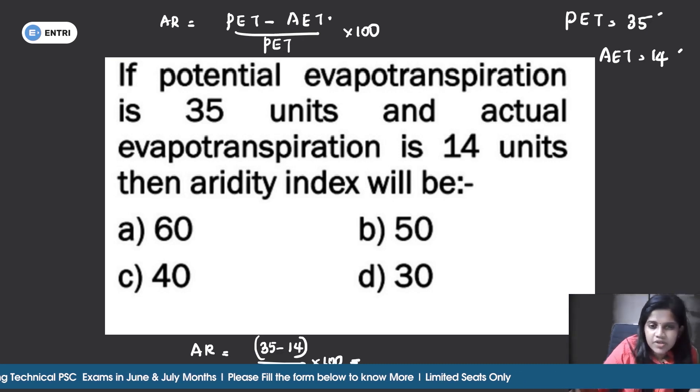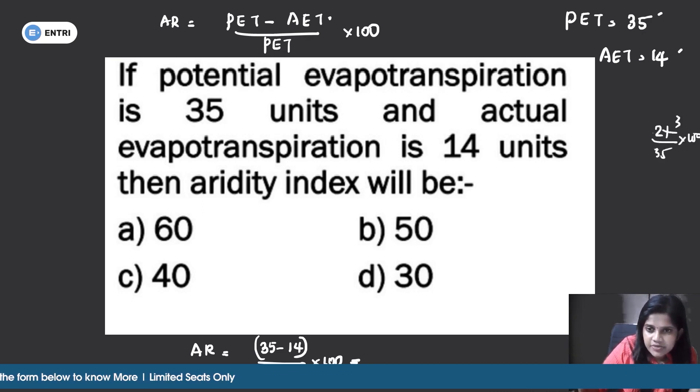So 35 minus 14 is equal to 21. 21 divided by 35 into 100 equals 60 percentage. Option A, the correct answer is 60 percentage. Aridity index is 60, Option A is the correct answer. Okay, clear on that.